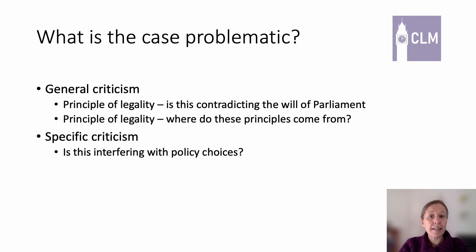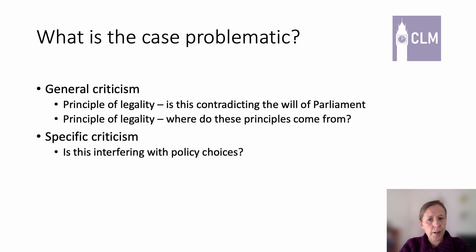The counter-argument is to say: these are long-standing principles, Parliament is aware of them, and so we can assume that if Parliament wanted to undermine these principles, it would do so by setting out very clear, specific, precise wording. So it's not actually contradicting the will of Parliament — it's just saying we want to make sure this is what Parliament really intended, because we'll assume Parliament doesn't want to undermine rights. We need to look for very specific, clear and precise wording to know there really has been a democratic mandate to act in a way that might undermine these fundamental principles of the common law.